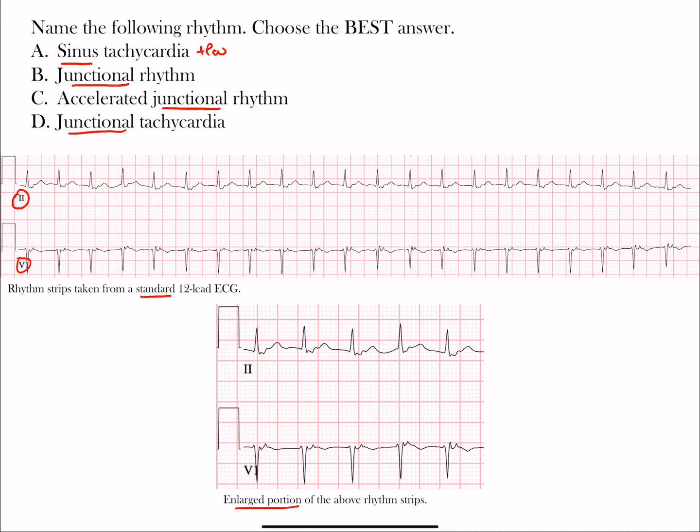With junctional rhythms, we will not see P waves unless they are coming at the end of the QRS complex or buried within it. If you look down here, we do not see P waves preceding our QRS complexes. There's no P wave coming before in these leads.